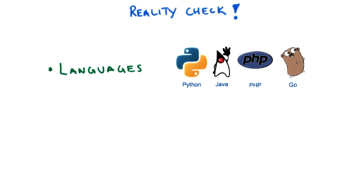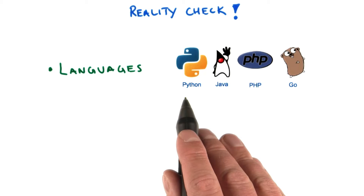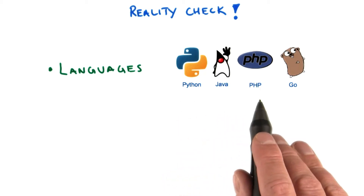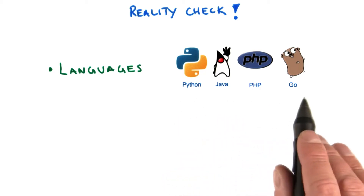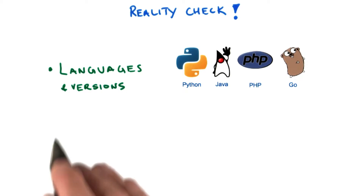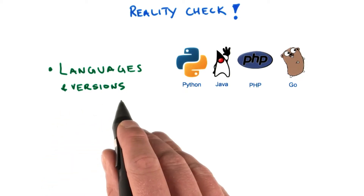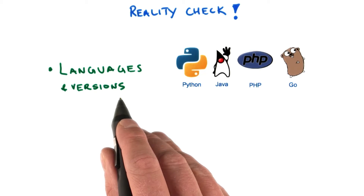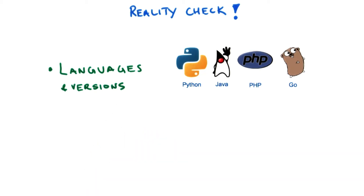This list has been extended over time, but App Engine currently supports Python, Java, PHP, and Go. And since App Engine is an execution container, it also means that there are specific versions of these languages that are supported. So this is something to think about.